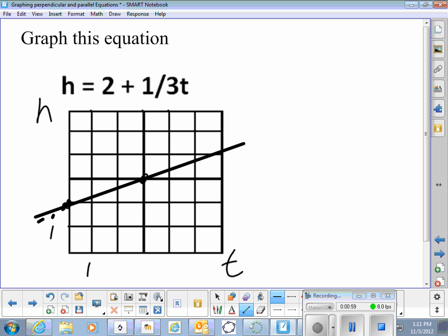Now a line that is perpendicular to that, let's try to just draw one in and see if we can make that work. Does that look like it's hitting that line at 90 degrees? More or less? Not quite. Let's undo that one. Okay that one looks a little better. Looks like it's hitting that other line at about 90 degrees.